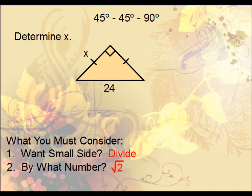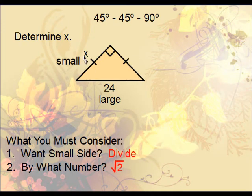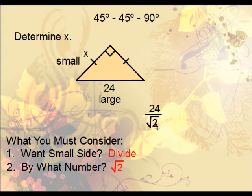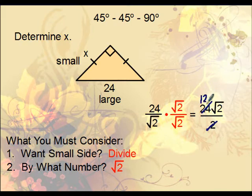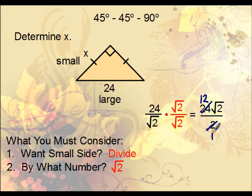One more 45-45-90 example: identify the large side (hypotenuse) and small side (the two legs adjacent to the right angle). To find the small side, divide: 24 divided by root 2. Rationalize the denominator by multiplying root 2 on top and bottom, giving 24 root 2 over 2. Unlike the previous problem, 24 and 2 reduce, giving 12 root 2 as the solution.